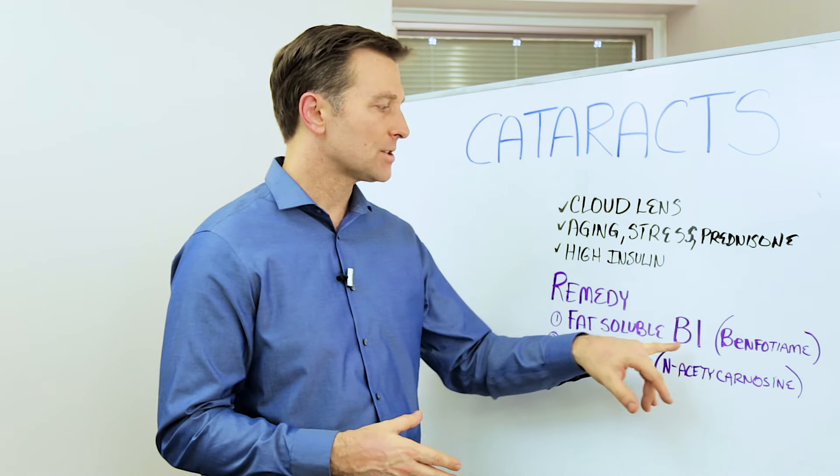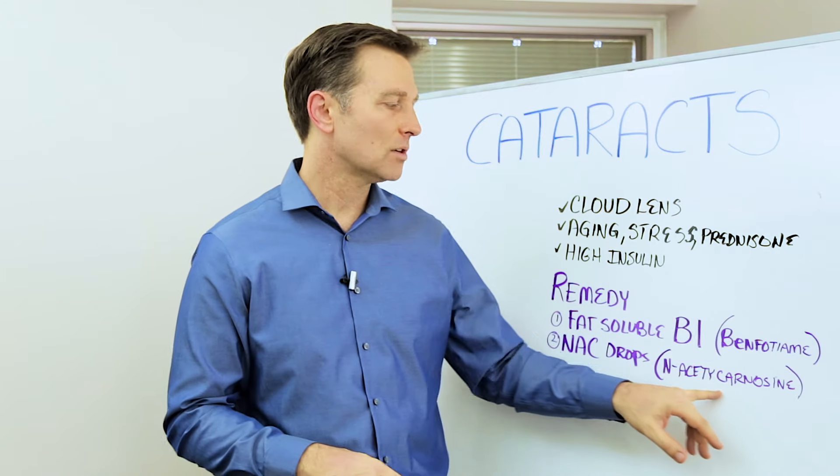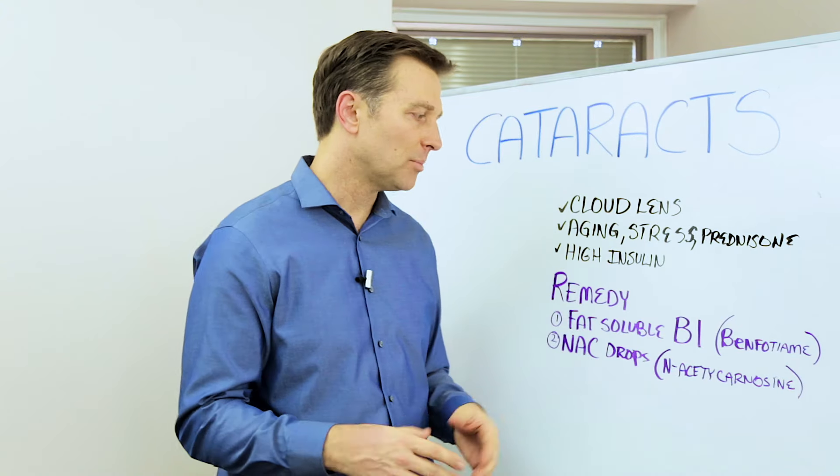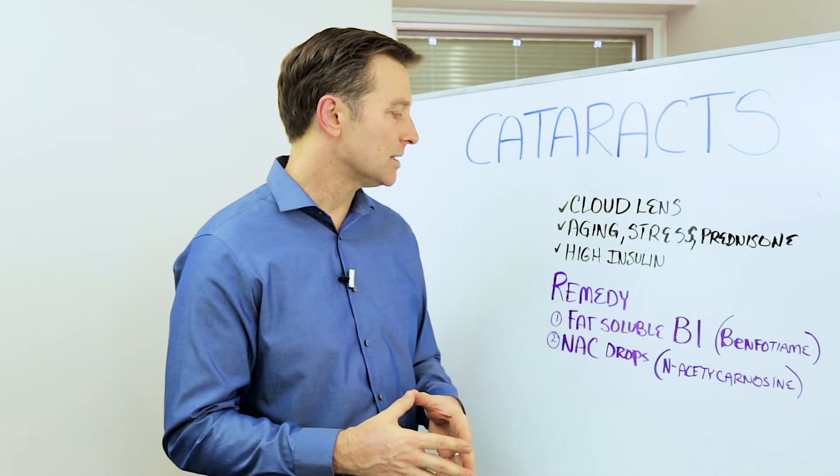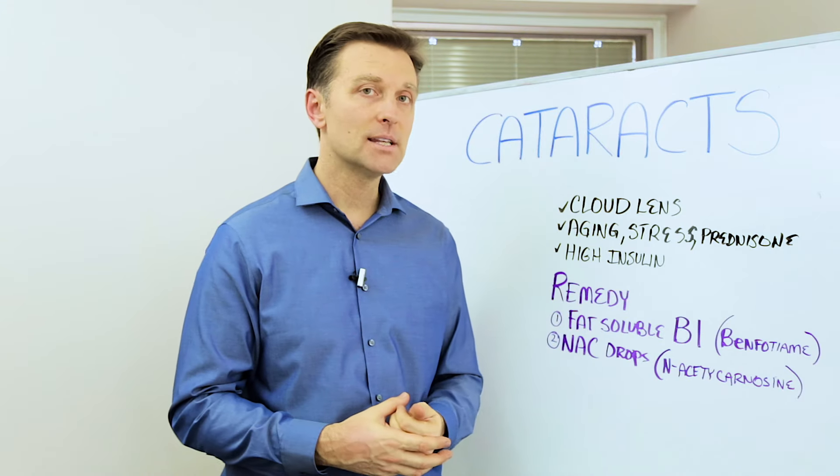And so you have to get it in the fat-soluble form. The next one is NAC drops, N-acetylcarnosine. This is another great remedy that you can take in drops. You can get it anywhere. I'll put a link down below. And you can start to use that to repair the lens of the eye.